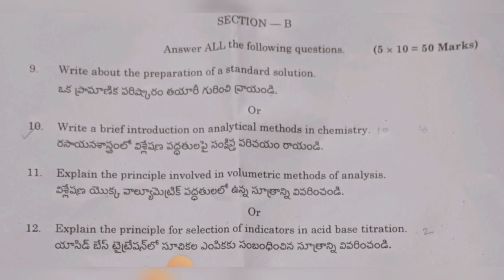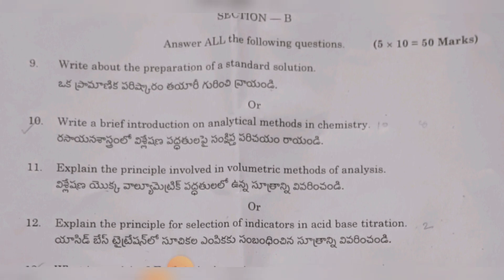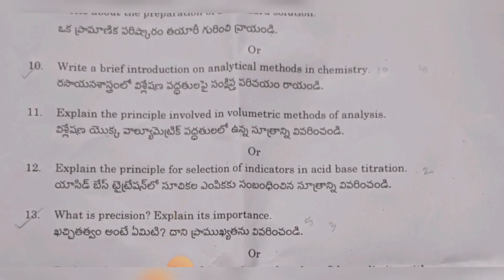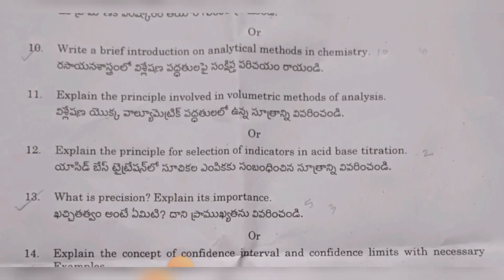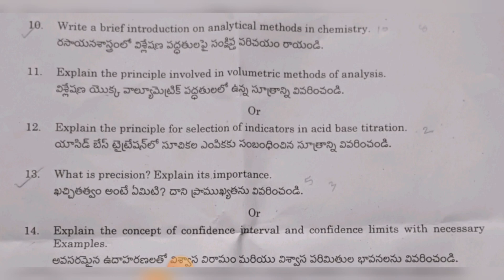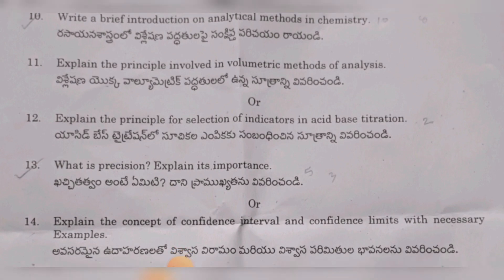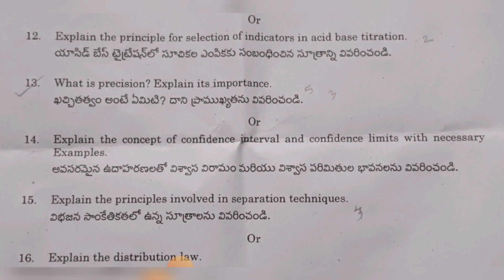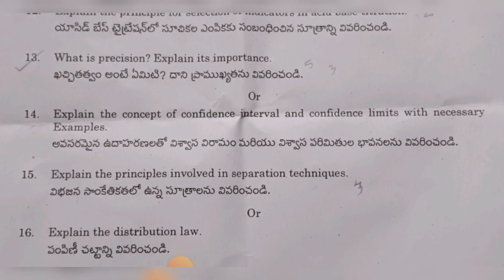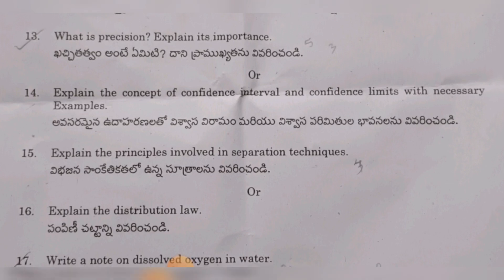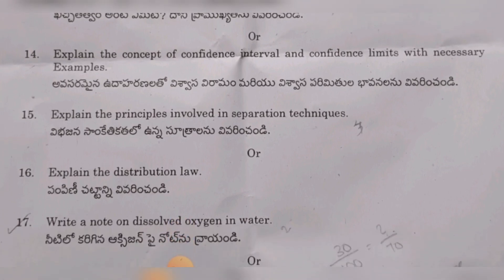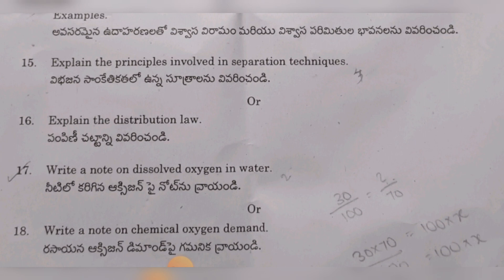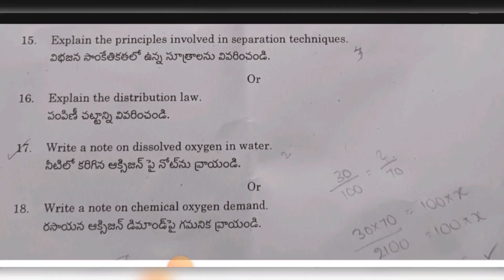Tenth: write a brief introduction on analytical methods in chemistry. Eleventh: explain the principle involved in volumetric methods of analysis. Twelfth: explain the principle for selection of indicators in acid-base titration. Thirteenth: what is precision? Explain its importance. Fourteenth: explain the concept of confidence interval and confidence limits with necessary examples. Fifteenth: explain the principles involved in separation techniques. Sixteenth: explain the distribution law. And write a note on dissolved oxygen in water and chemical oxygen demand.